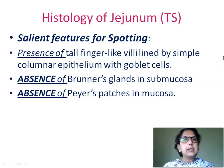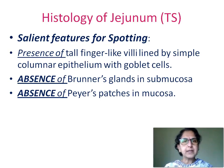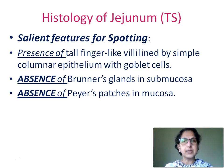The salient features for spotting a slide of histology of jejunum transverse section are: presence of tall finger-like villi lined by simple columnar epithelium with goblet cells, absence of Brunner's glands in the submucosa, and absence of Peyer's patches in the mucosa.